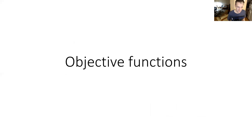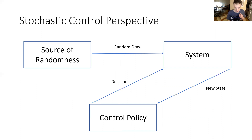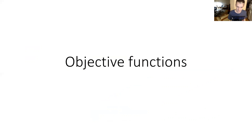Since we are viewing the pension decumulation problem as a stochastic control problem, we need an objective function to judge which control policies are better or worse — some criteria according to which to evaluate control policies. The question is: how should we choose an objective function for this problem?